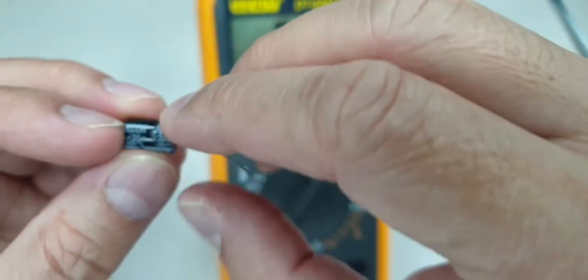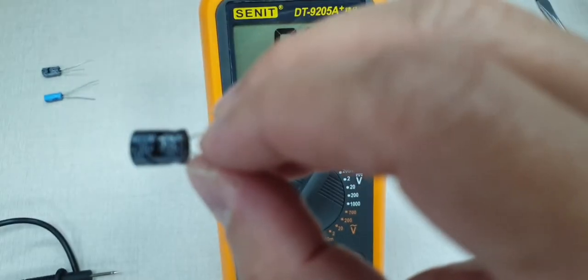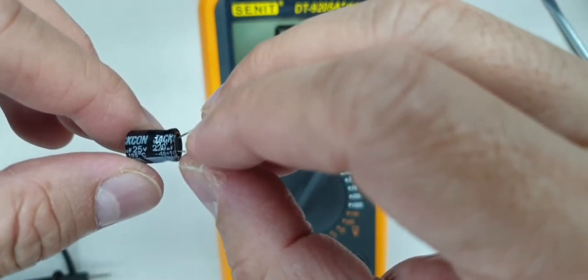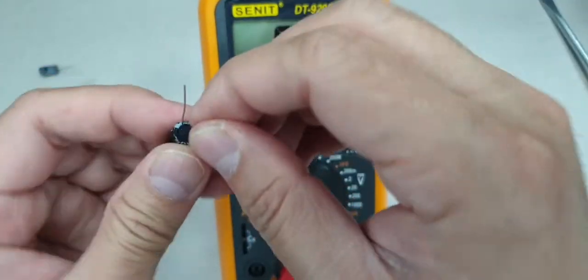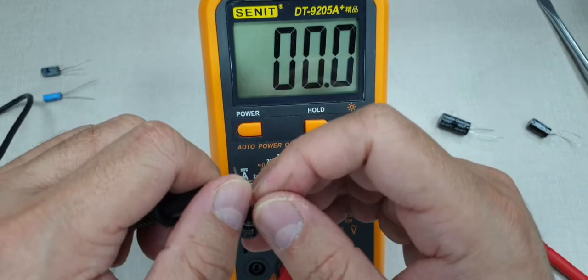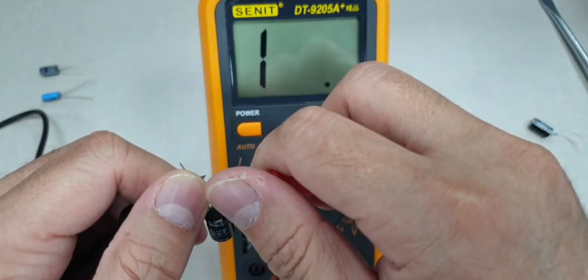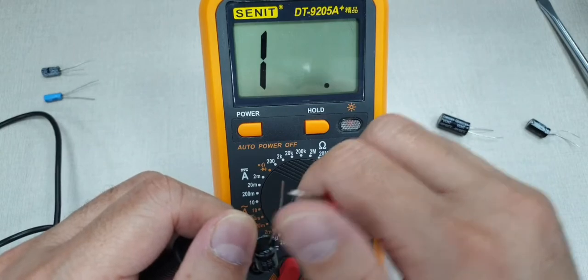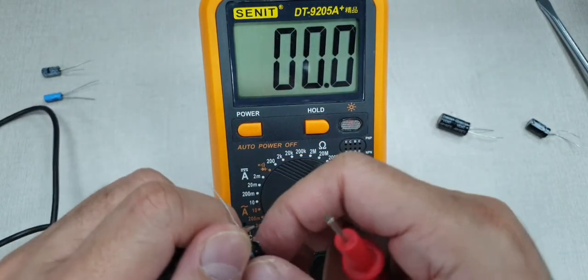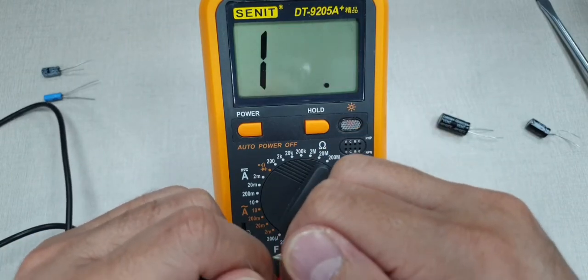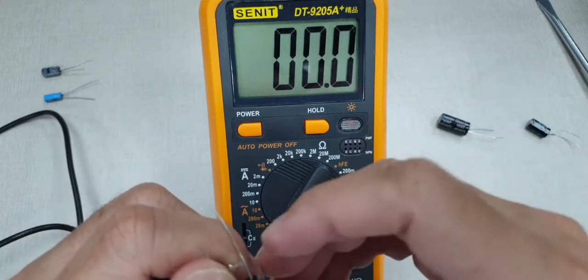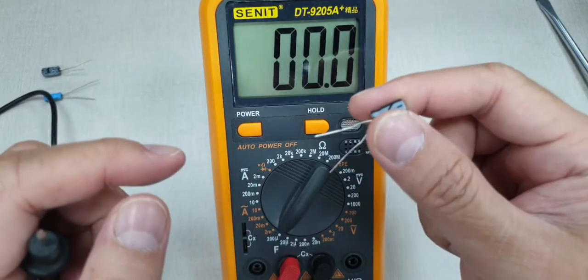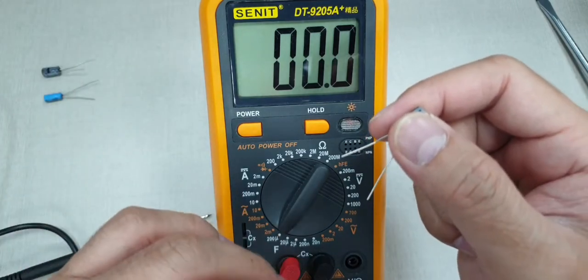Next is 220 microfarad, 25 volts. Let's test this out again. Oh, now you see, if the value of the LCD in the multimeter says 1, it means that it is out of its scope. So if we're not able to know the capacitance, then we just need to check its charging rate and discharging rate. If it's still okay.